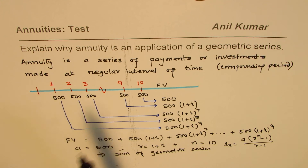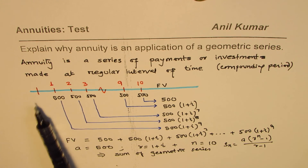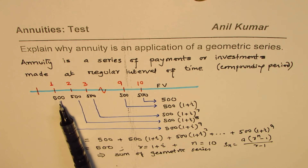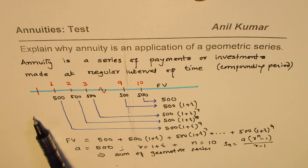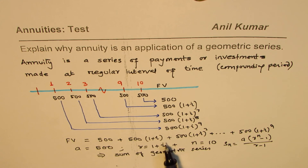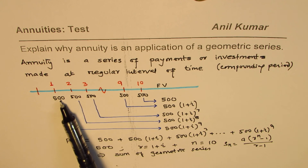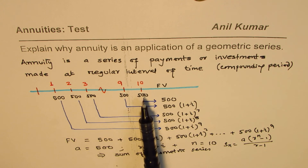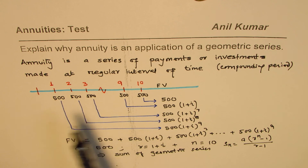In the case of present value — where you have deposited a lump sum and receive $500 every month — that is also a geometric series. There, a = 500, r = (1 + i)^(−1), and n = 10. So if you are receiving payments of $500 regularly for 10 years at the end of every year, their present value can be calculated in that fashion.